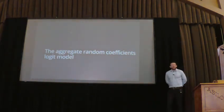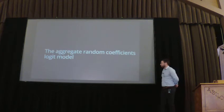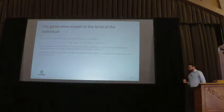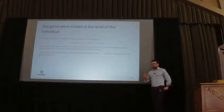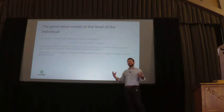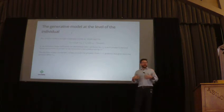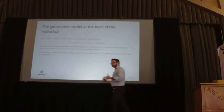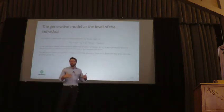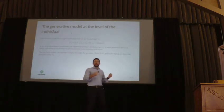So, one model that does all these three things is the aggregate random coefficients logit model. The aggregate coefficients logit model is a model of individual behaviour. But remember that the data that we observe is at the aggregate sales level. So, the trick is that we really need to generate inference for what the individuals are doing, but we never observe any individuals. But we want to start with the generative model at the individual level. So, what is that generative model?